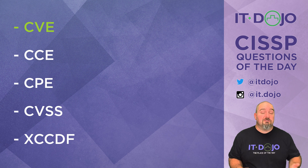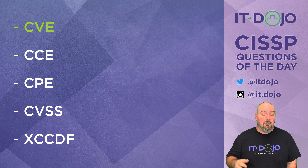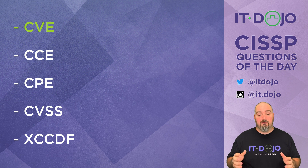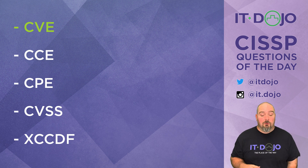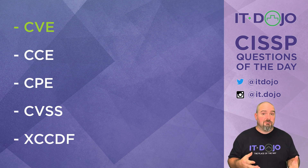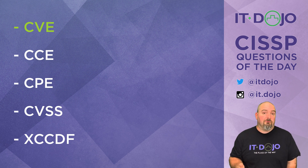CVSS, the Common Vulnerability Scoring System, is a way to give a numeric rating — typically on a scale of 0 to 10, with 0 being the least significant and 10 being critical. It gives you a numeric rating that's easier to understand in terms of how severe a particular vulnerability is. It looks at the impact on confidentiality, integrity, and availability, and also considers things like the attack vector, how hard the attack is to execute, how much user interaction is involved, and how mature the known exploits are — and then spits out a numeric rating that makes it easier to digest just how severe the issue is.